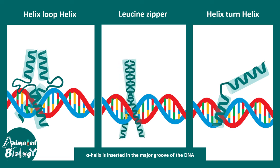Other examples include leucine zipper motifs, which are alpha-helical structures inserted into the grooves, and helix-turn-helix motifs sitting on the DNA in the major groove region. So the major groove of DNA is a key site of interaction for many transcription factors. Some transcription factors also have beta-pleated sheets in their DNA binding domain, and a few interactions happen in the minor groove, but in most cases it is the major groove that is targeted.